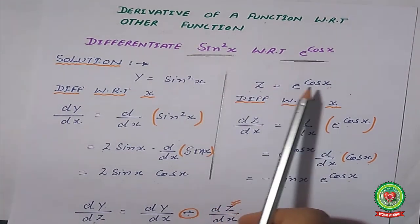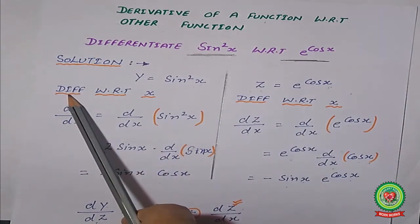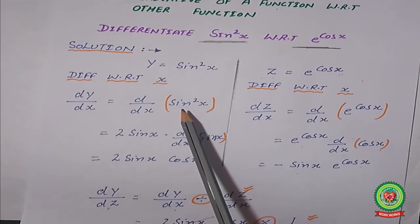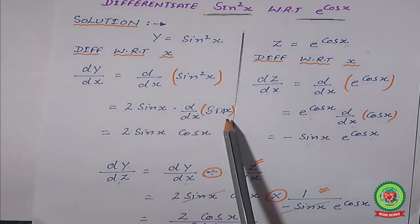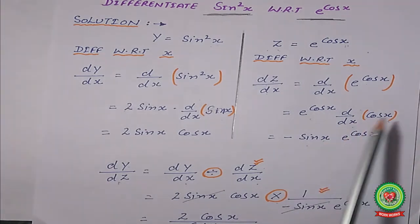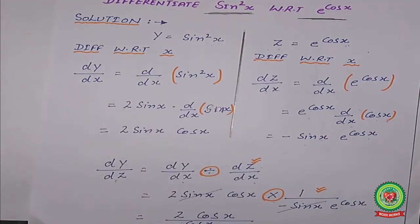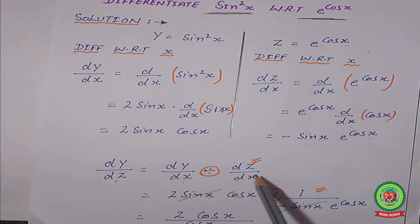We suppose one variable for one function and another variable for the other function. In this case, both are changing in x with respect to x, though it may be another variable also. So we differentiate both with respect to x. Differentiating sin²x: by the degree rule it becomes 2 sin x · cos x. Differentiating e^(cos x): it becomes e^(cos x) · (−sin x). In chain rule we multiply both differentiations, but in derivative of a function with respect to another function, we divide them — same as in the parametric equation.